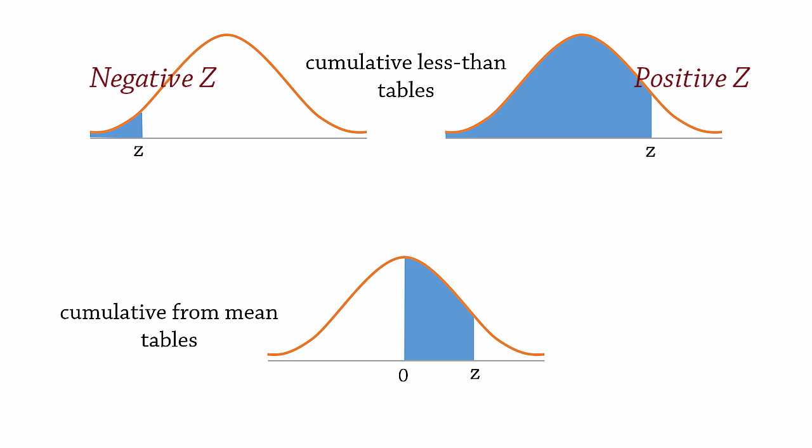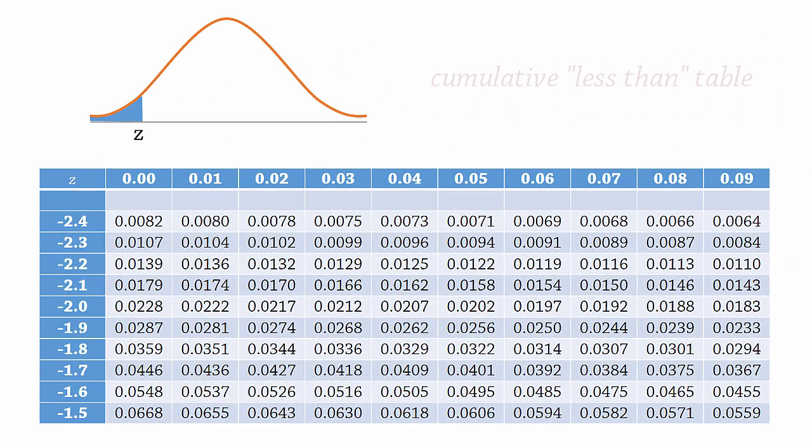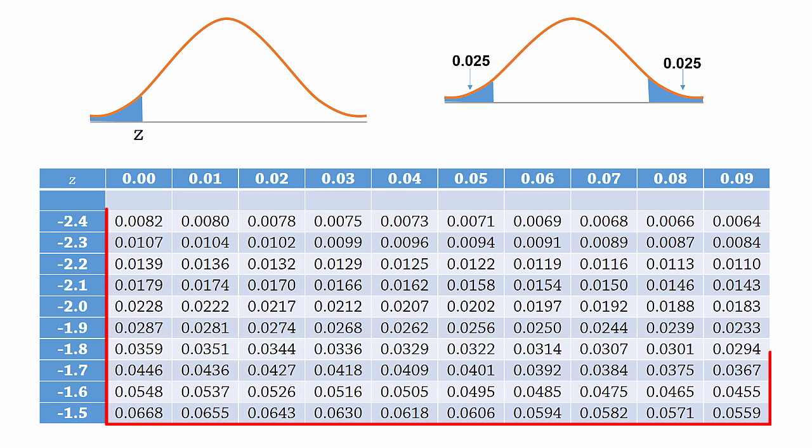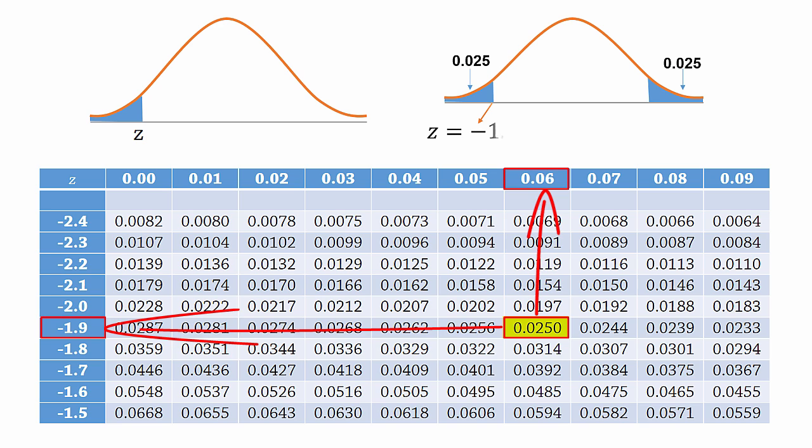These pictures are usually displayed at the top of the respective tables. To find the critical value on the cumulative less-than table on the negative side, since the area in the left tail is 0.025, we search for the closest value to 0.025 in the body of the table. We actually have 0.025 here, corresponding to a z-score of negative 1.96. And because of symmetry, the positive score is also 1.96.